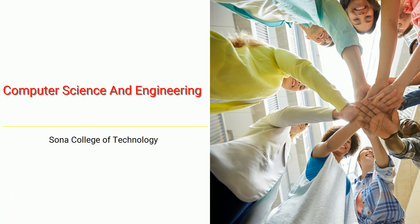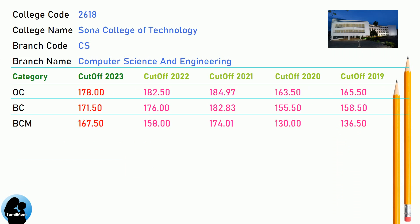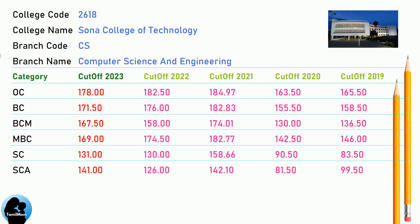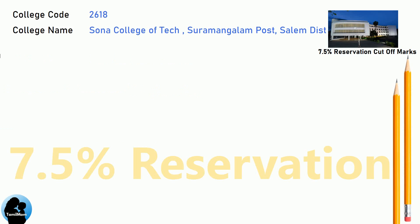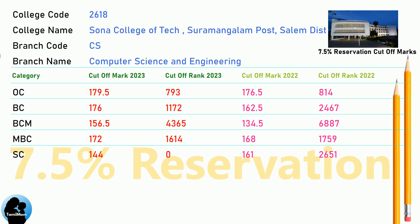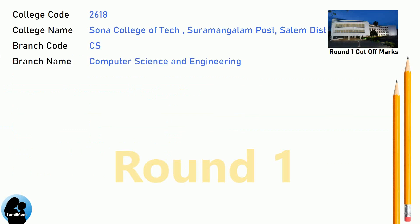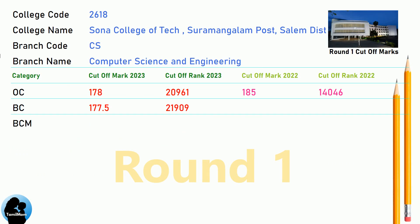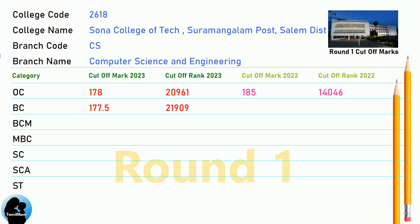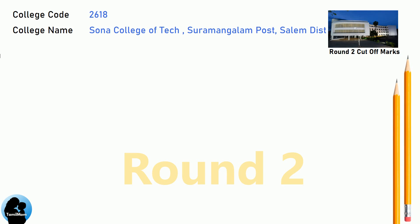DNA cut-off for Sona College of Technology in Computer Science and Engineering. DNA 7.5 Reservation cut-off for Sona College of Technology in Computer Science and Engineering. DNA Round 1 cut-off for Sona College of Technology in Computer Science and Engineering. DNA Round 2 cut-off for Sona College of Technology in Computer Science and Engineering.